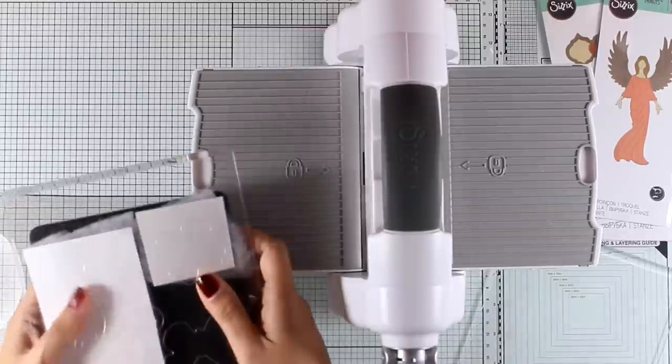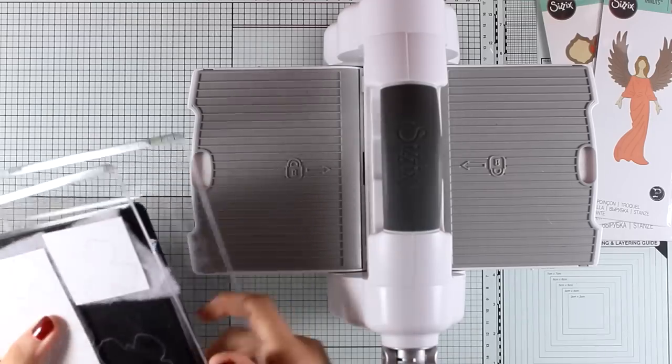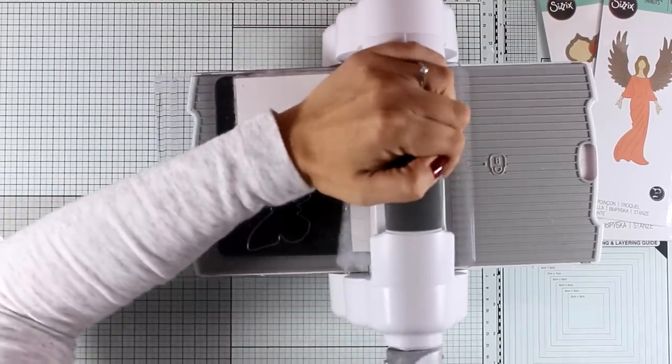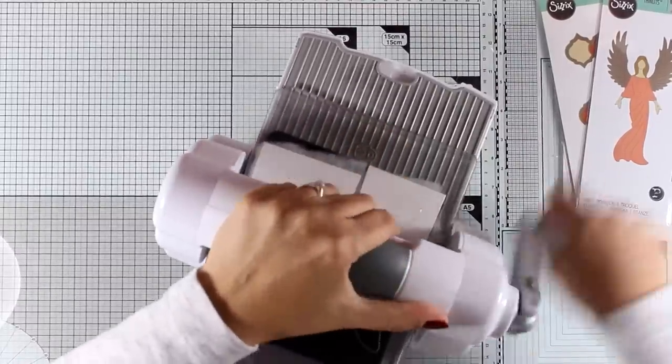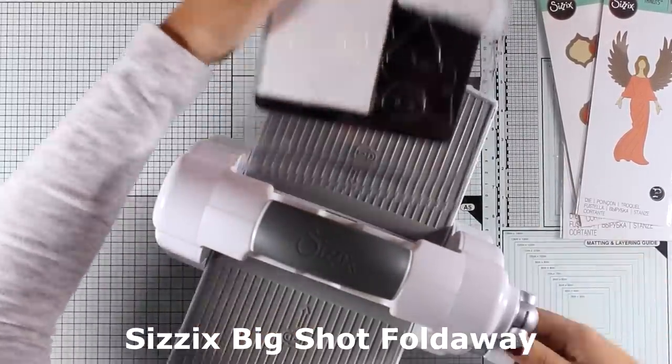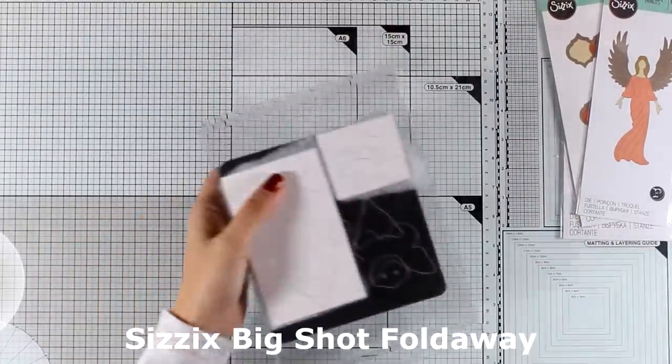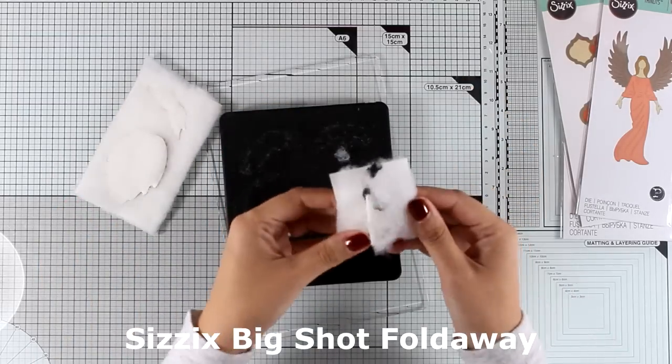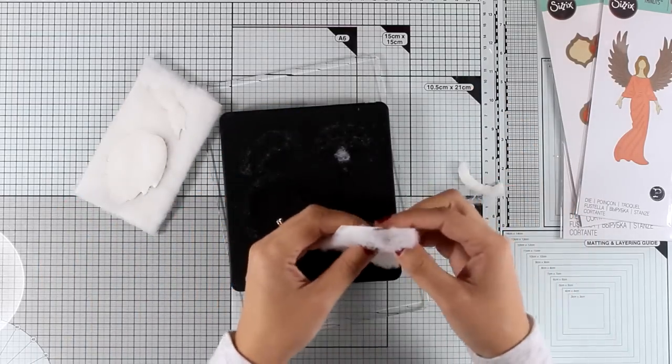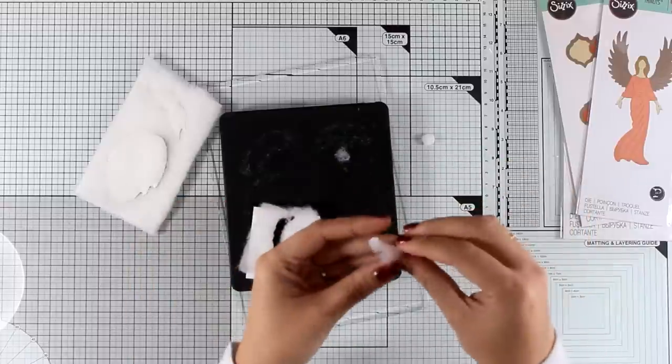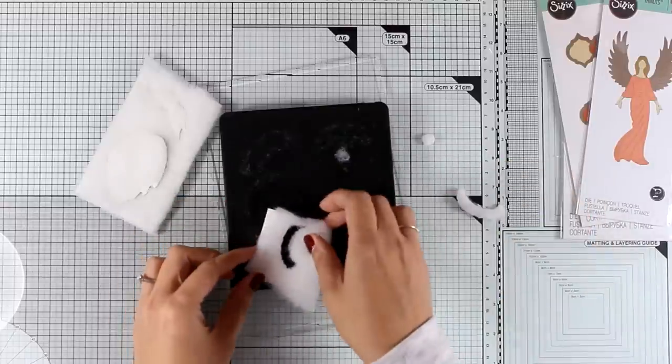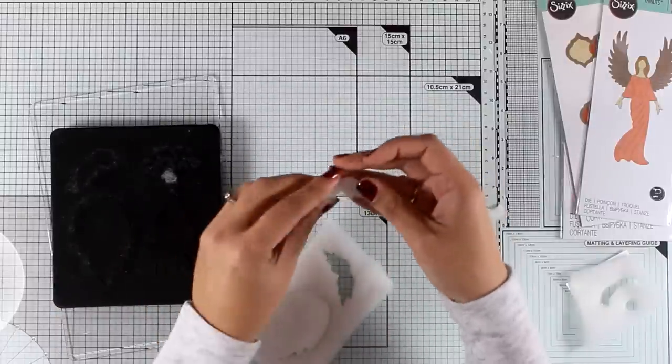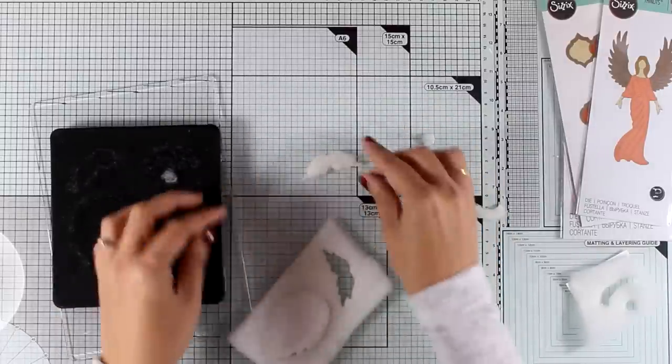I'm going to place them on top of my Bigz die with the batting touching the blades. I created my sandwich just with the cutting plates on top and at the bottom, and I'm running them through my Big Shot machine. By the way, this is like a Big Shot but it's a fold-away machine—it's available in Europe and I did make a review a while back. Now as you can see, I am separating all the little pieces that were all cut out like butter. I'm going to take out the mustache here and I like how thick it is—it looks like real.